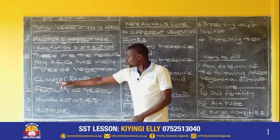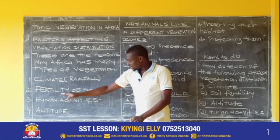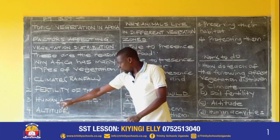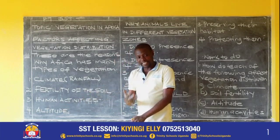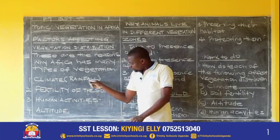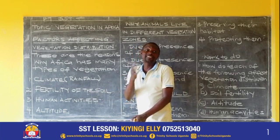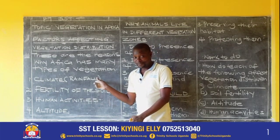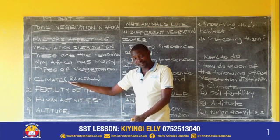One of the reasons is climate, or rainfall. The other one is fertility of the soil. The other one is human activities, what we commonly call man's activities. And lastly, altitude. Each of these reasons, you must be able to explain how it makes vegetation to be different. And at the end of the lesson, I'll put an exercise. I'm going to tell you here, so you must be very attentive.